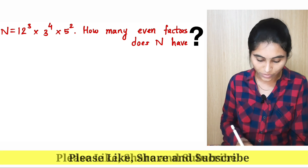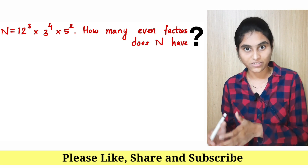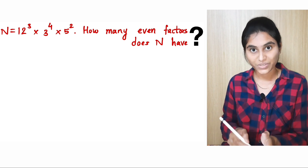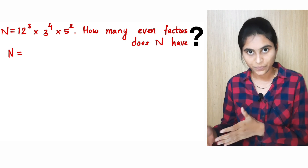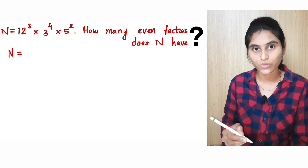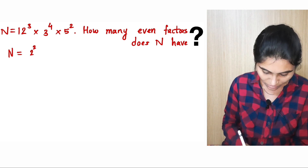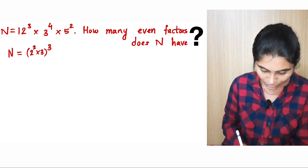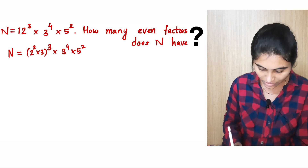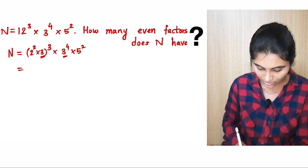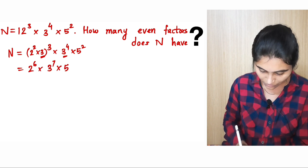Here n is equal to 12 cube times 3 raise to 4 times 5 square. So let us write the prime factorization of n — that means express n as a product of powers of primes. Now, 12 is equal to 2 square times 3. So we have 2 square times 3, and it is cubed, times 3 raise to 4 times 5 square. Taking the powers together, this gives us 2 raise to 6 times 3 raise to 7 times 5 square.